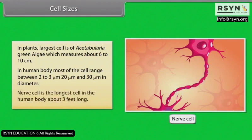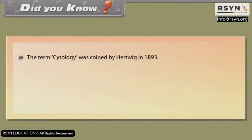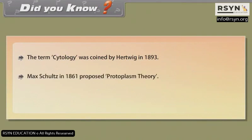The nerve cell is the longest cell in the human body, about 3 feet long. The term cytology was coined by Haltwick in 1893. Max Schultz in 1861 proposed the protoplasma theory. Sax proposed the organismal theory in 1874.